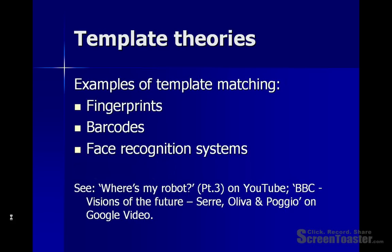Another example that is becoming more important and increasingly developed is face recognition systems. However, these currently are far from perfect, for all of the reasons that psychologists are interested in, and it illustrates the difficulty we have in trying to understand how perception actually works. There are a couple of interesting video clips available online that illustrate the difficulties of face recognition and object recognition generally — one on YouTube called 'Where's My Robots' and another on Google Video called 'Visions of the Future', which are worth taking a look at.